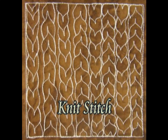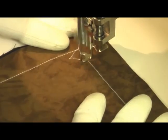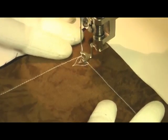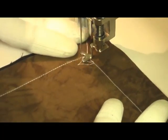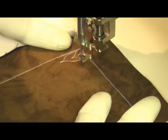This is the free motion quilting tutorial for knit stitch. This is quilted by first starting with a slightly curvy kind of V shape. And then you're going to travel down and stack another slightly curvy V shape on top.